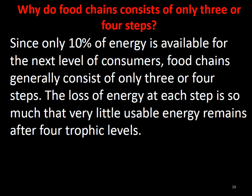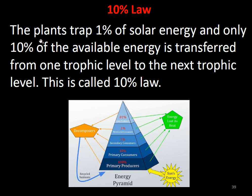What is the 10% law? The plants trap only 1% of the solar energy. If primary consumers are assumed to have 100%, only 10% is taken by secondary consumers, then 1%, then 0.1%, then 0.01%. This is the flow of energy — plants have 1% of solar energy, and only 10% of available energy is transferred from one trophic level to the next trophic level. This is called the 10% law.